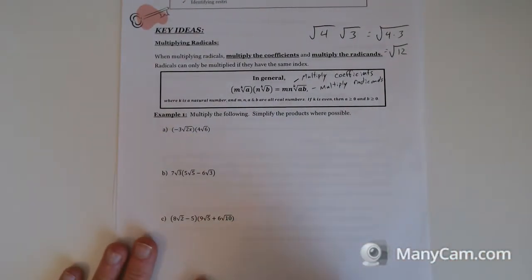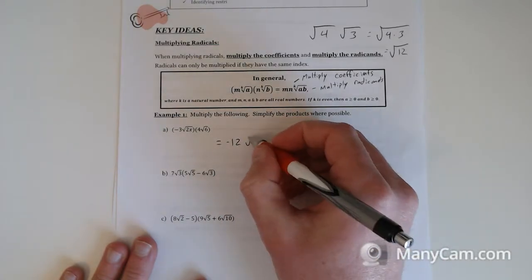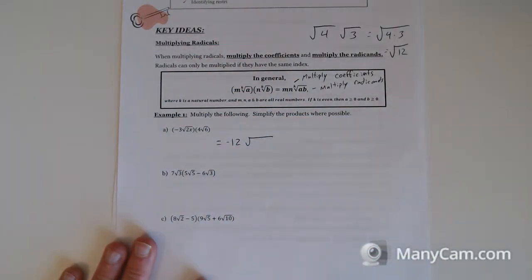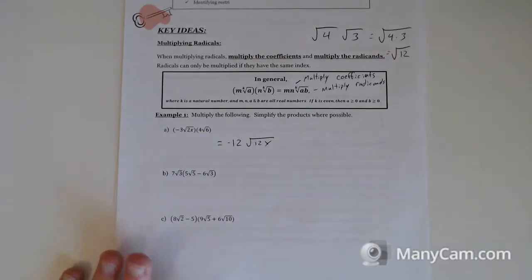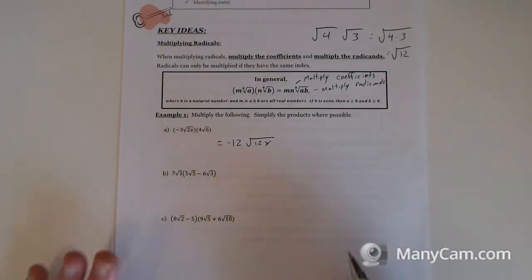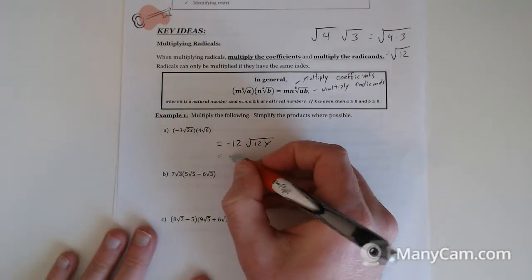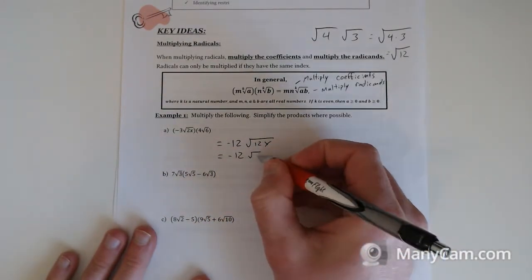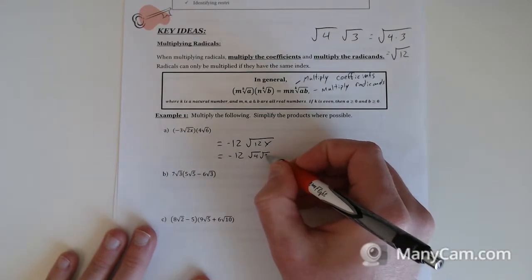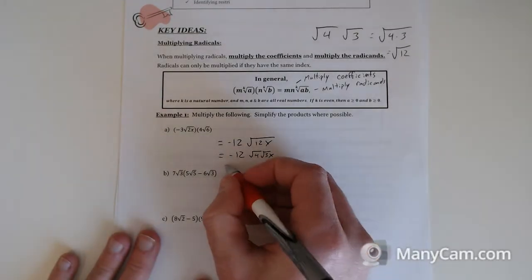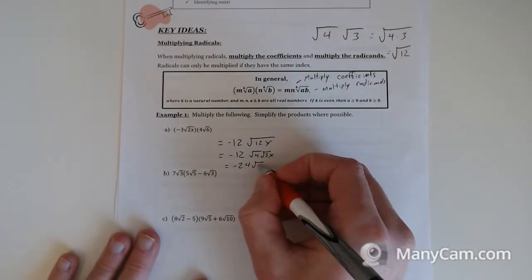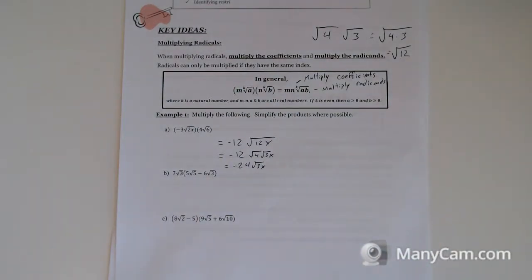Let's try that. In the first one, multiply the coefficients — that makes negative 12. On the inside, you multiply the radicands: 2x times 6, which is 12x. Now this can be simplified. You can divide 12 by 4, so it's going to be root 4 times root of 3x. Then root 4 becomes 2 on the outside, so it's going to be negative 24 root 3x.